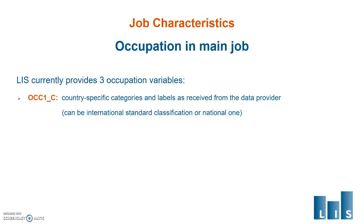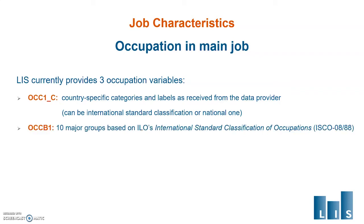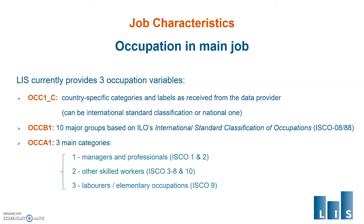LIS currently provides three occupation variables. Occupation1_C is a country-specific variable at the most detailed level received from the data provider and can be an international or a national classification. OccupationB1 distinguishes between 10 major groups based on the ILO International Standard Classification of Occupations, either 2008 or 1988, or even 1968 for very old datasets. You can see which classification was used in the label of the Occupation1_C variable.